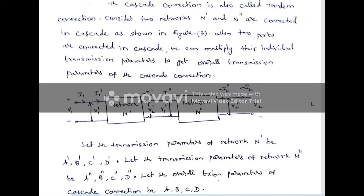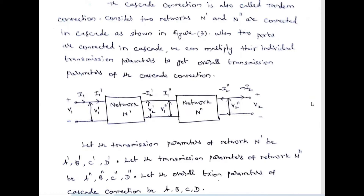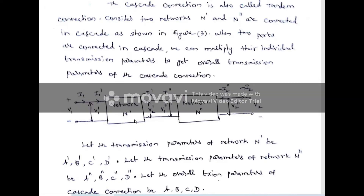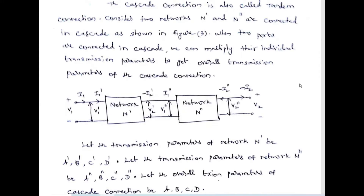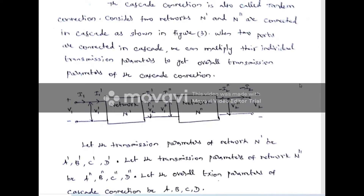The overall parameter of these two networks can be solved using the transmission parameter, that is the ABCD parameter. The overall ABCD parameter of two cascaded networks is nothing but a multiplication of the ABCD parameter of the first network and the ABCD parameter of the second network. If two networks are connected in series, the Z parameter values must be added; if connected in parallel, the Y parameters must be added; if connected in cascade, the transmission parameters must be multiplied.